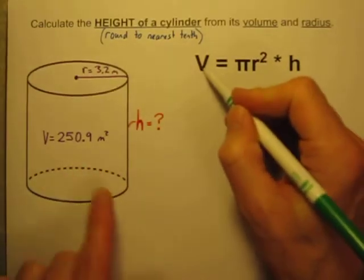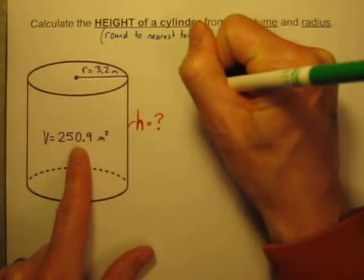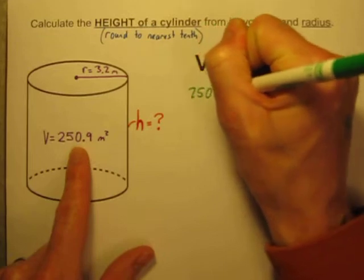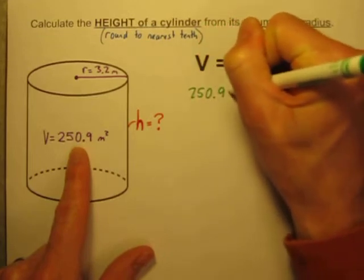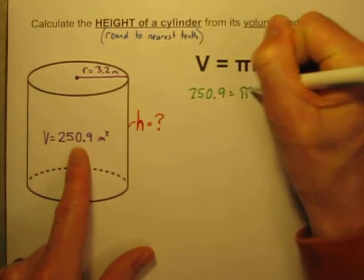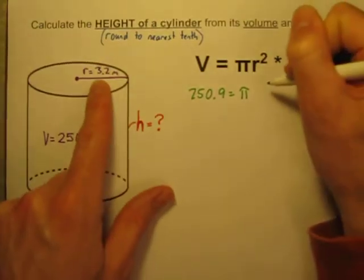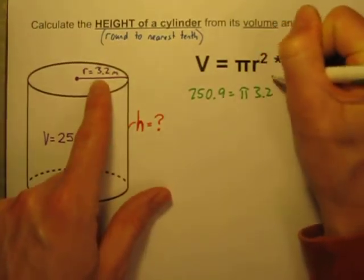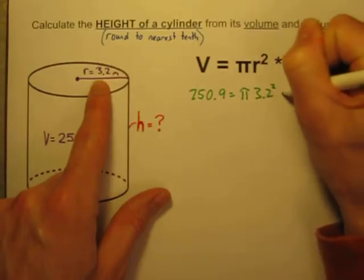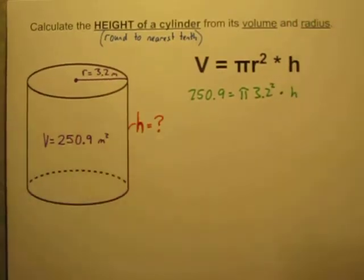So first I'm going to put the numbers from the problem into the formula. The volume is given to us as 250.9, there's pi. The radius is 3.2, so I'm going to go times 3.2 to the second power times height. So the height is what I want to solve for there.